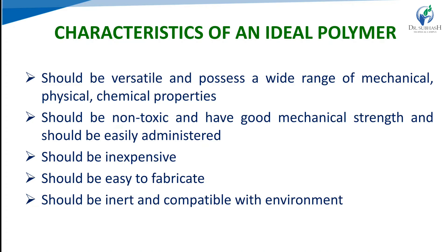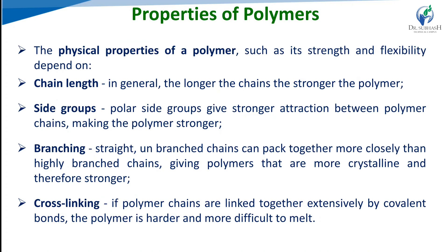The ideal characteristics required in a polymer for use in any dosage form or drug delivery system: it should be versatile, possessing a wide range of mechanical strength, physical and chemical properties. It should be non-toxic with good mechanical strength, easily administered, easily available, easy to formulate and fabricate, economical, and chemically and physically inert and compatible with the biological environment.